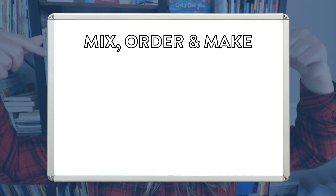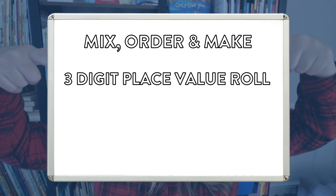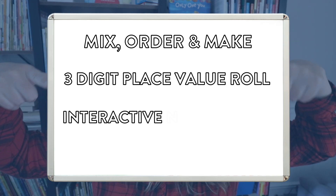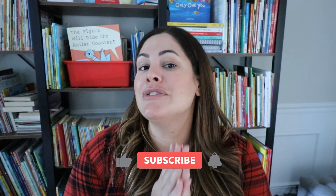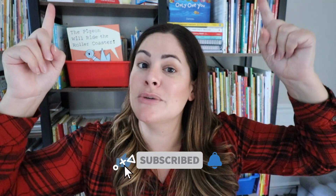So there you have four easy and effective activities to help your students develop number sense through 1000. To quickly recap: Mix, Order, and Make; Three-Digit Place Value Roll, which is a free printable you can grab today; the interactive number line; and circle counting. I'd love to know if you've used any of these in your classroom and if your students liked them. Let me know in the comments. As always, I hope you enjoyed this video — please give it a thumbs up, subscribe to my channel, and click the bell so you're notified of every new video. See you in the next one!